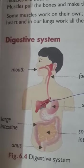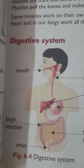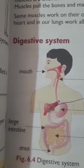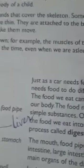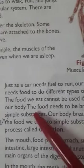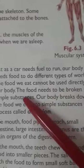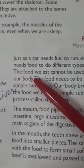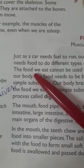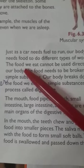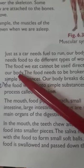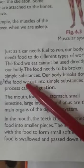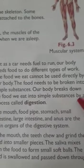For running every machine it needs some fuel. In the same way, our body needs food to perform different functions. The food we eat cannot be used directly by our body — it needs to break down, digest, and absorb. Then the nutrients are used up by the organs. The food needs to be broken into simple substances.